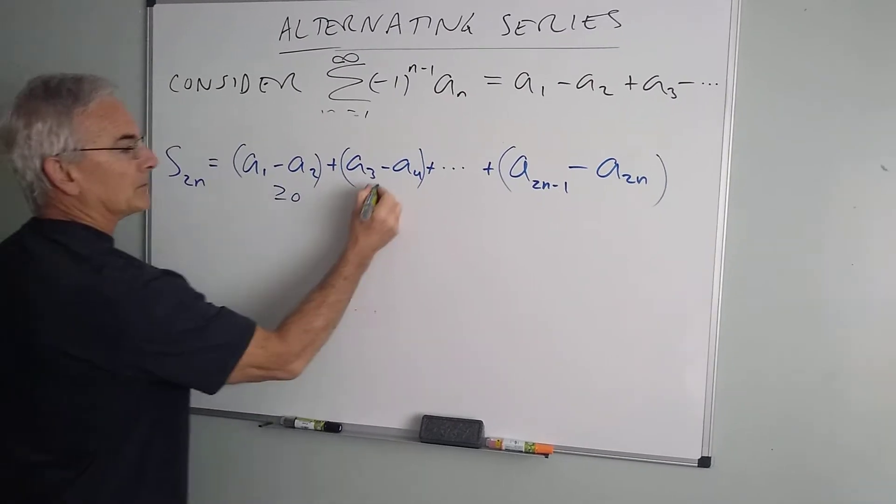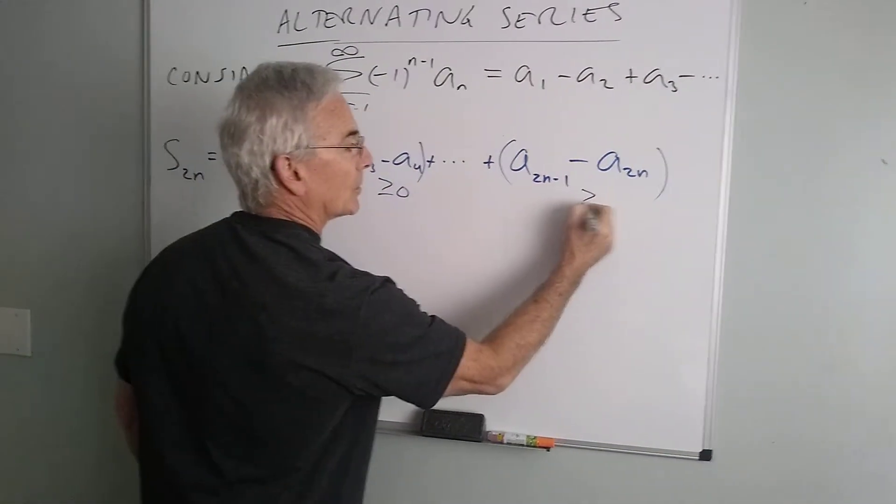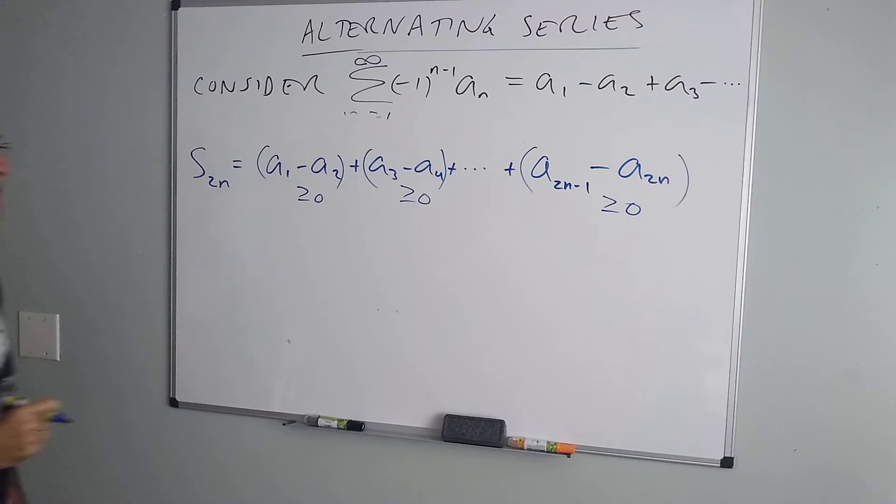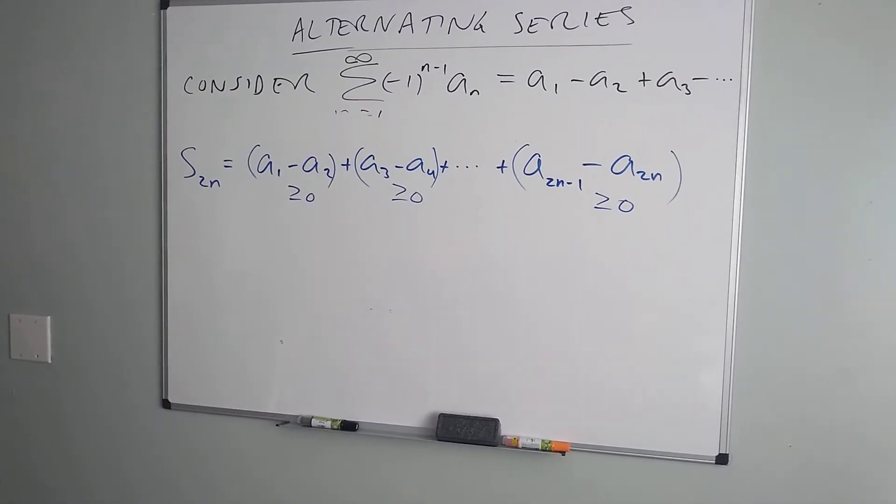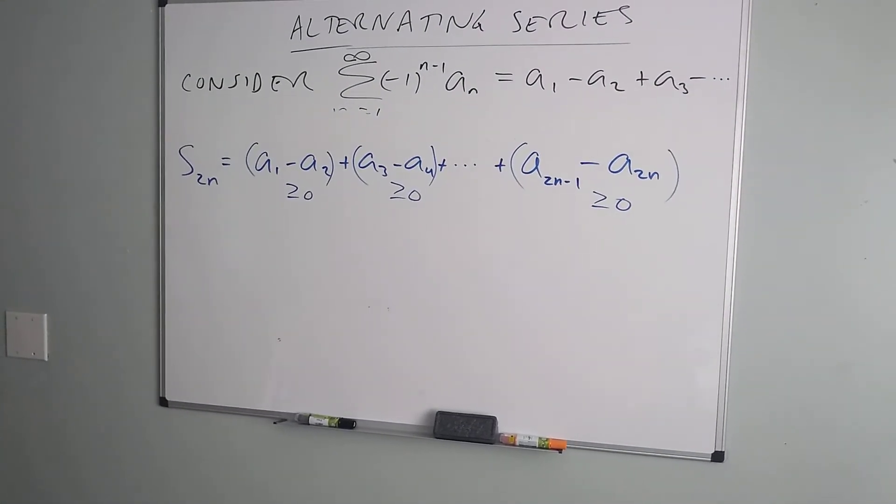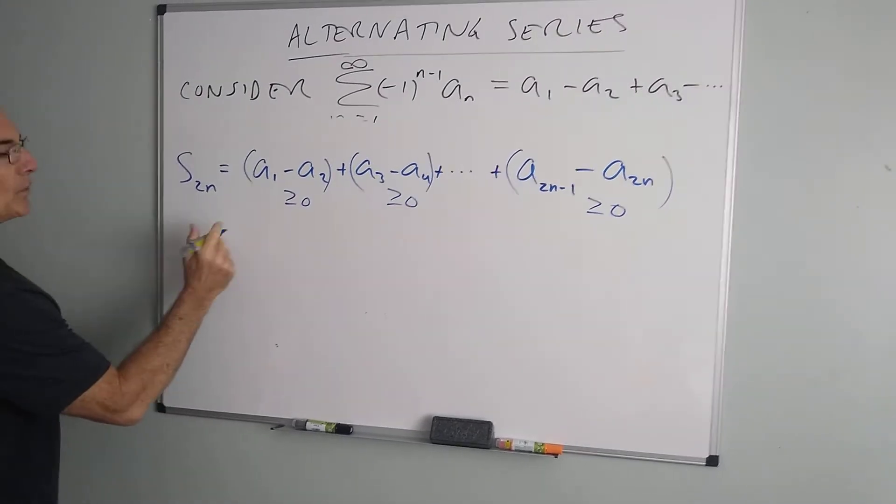This will be greater than or equal to zero, greater than or equal to zero, all the way down the line because we said the terms are actually getting smaller in size. So we do know that this sum is greater than zero. So now let's rearrange the sum.